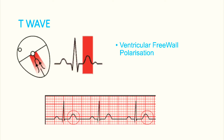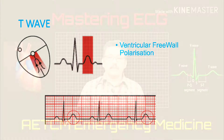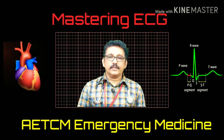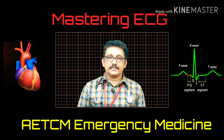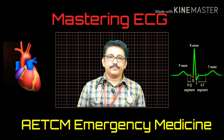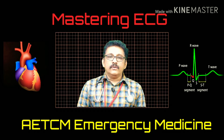The T-wave is always upright — it is dome-shaped, not very tall, not very short, and not inverted. So normally, after the QRS complex and after the ST segment, you get an upright T-wave.